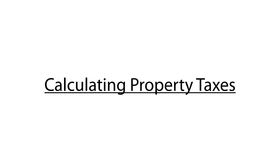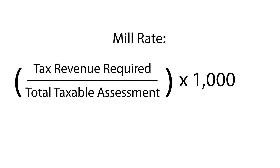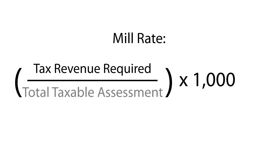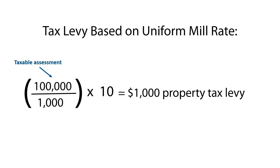Calculating property taxes: municipal councils establish a mill rate for each property class. The mill rate represents the amount per every $1,000 of a property's assessed value. The mill rate is determined by dividing the amount of tax revenue that the municipality requires by the total taxable assessment and multiplying that number by $1,000. Suppose all three property classes have a taxable assessment of $100,000 each and a municipal council proposed a uniform mill rate of $10. That mill rate is applied to $1,000 of taxable assessment; therefore, the property tax levy for each property will be $1,000.